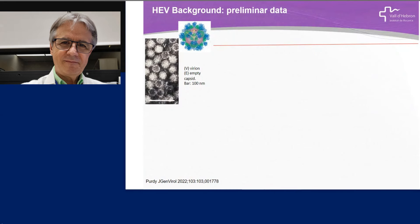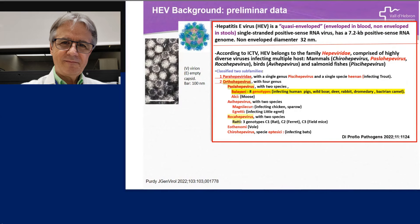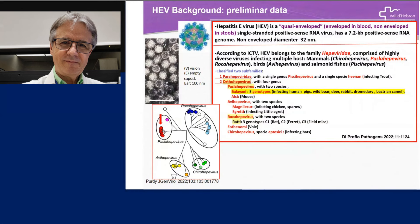According to the last update, hepatitis E virus is a quasi-enveloped virus — a very strange name because it's enveloped in blood but not enveloped in stool. It's a single-stranded positive-sense RNA virus. According to the last update of virus classification, hepatitis E virus belongs to the family Hepeviridae, which comprises highly diverse viruses infecting multiple hosts like mammals, birds, and salmon and fish. Among the mammals, human hepatitis E virus belongs to the family genus Paslahepevirus, and especially species Balayan — named in memory of the discoverer Balayan — which includes eight genotypes infecting, in addition to humans, pigs, wild boar, deer, rabbits, rodents, and Bactrian camels.